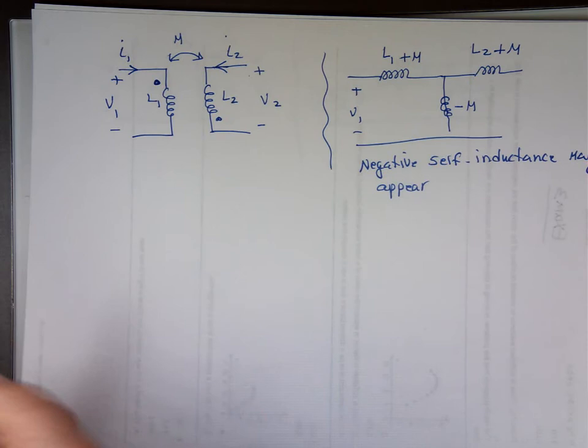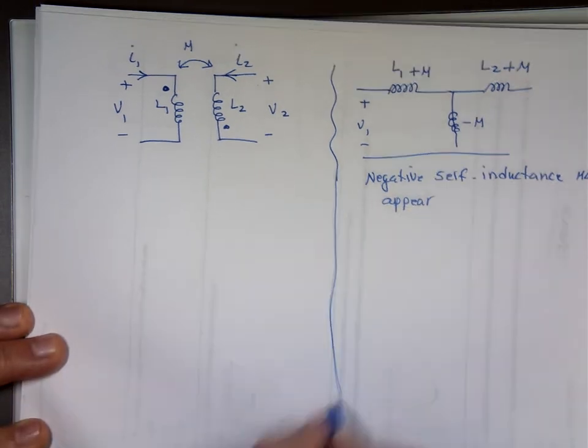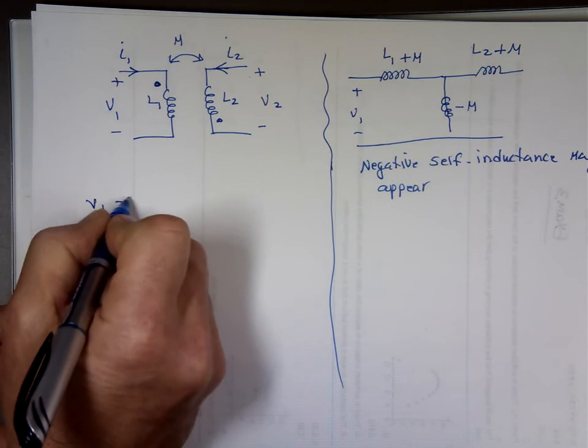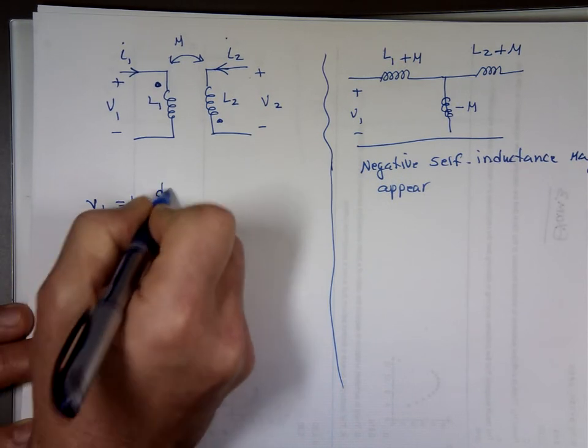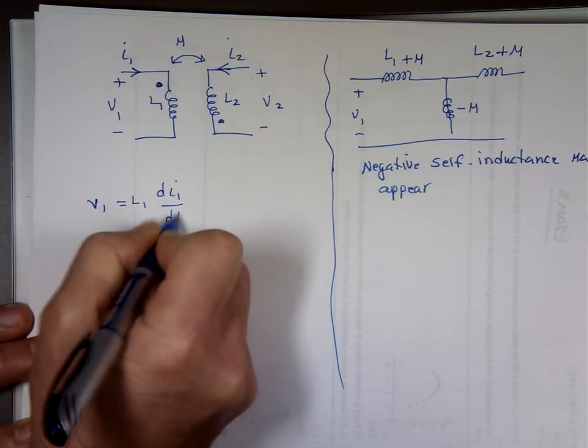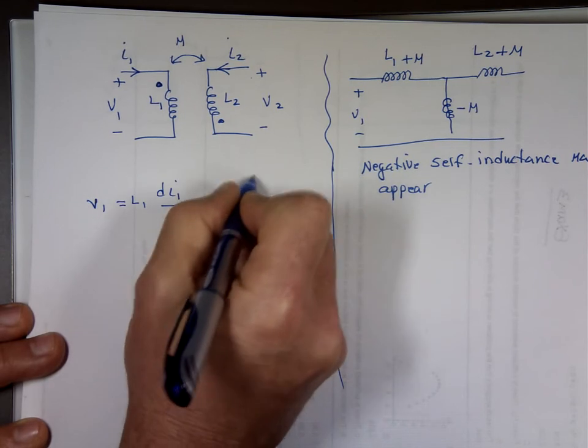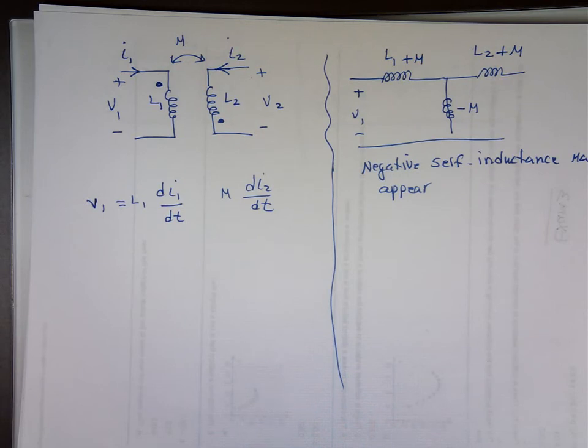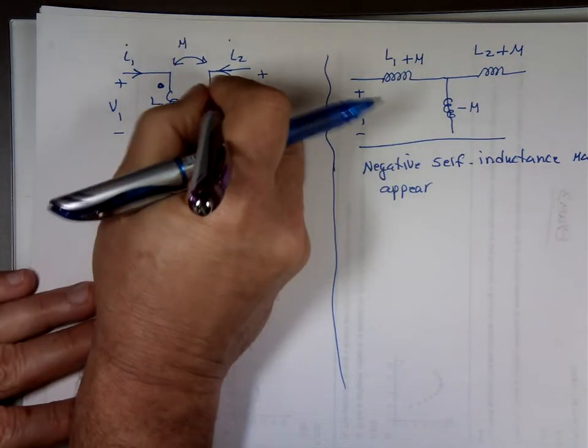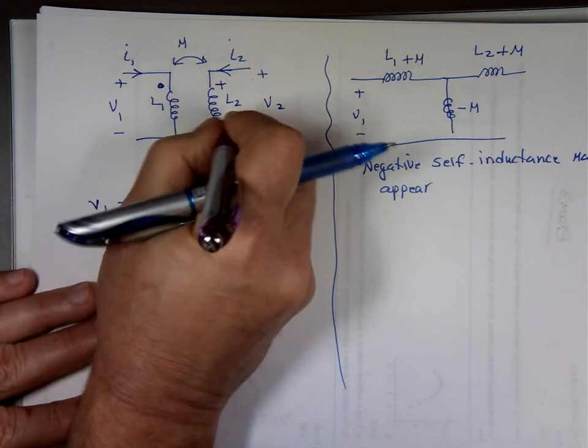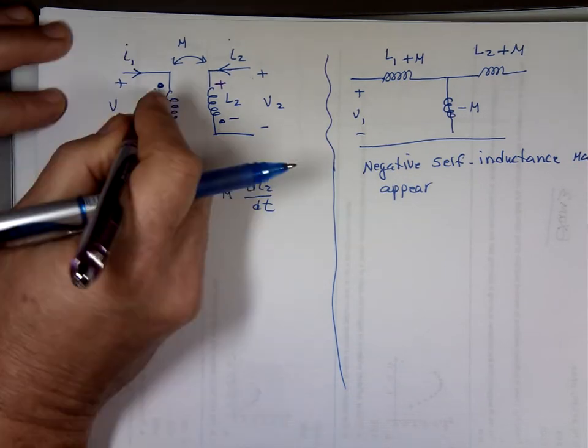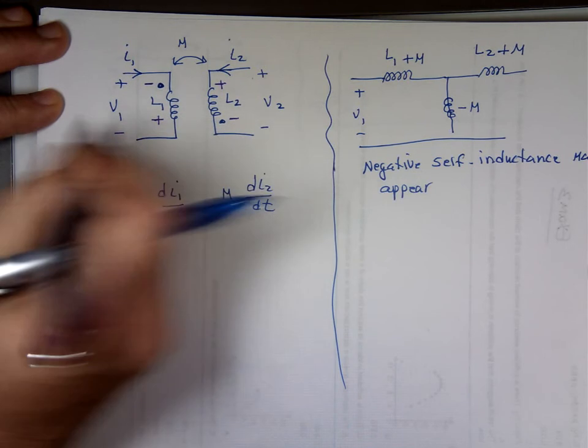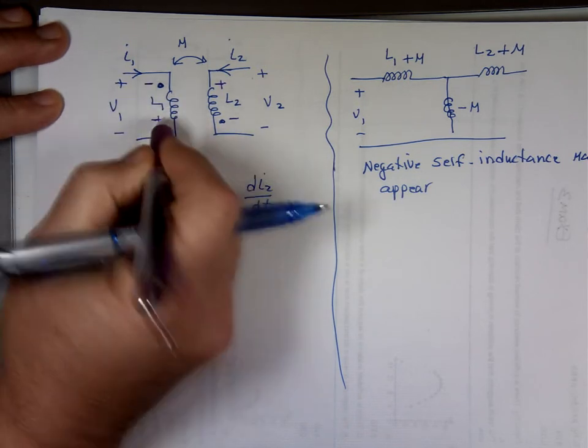And again, we can derive this quickly. I'll do one of them. I'm not going to do both. V1 here equals what? L1, Di1, Dt. And let's look at the mutual inductance, Di2, Dt. The mutual inductance, the current comes down. It marks this plus to minus. Which means the dot here is going to match that dot. It's going to be minus here. It's going to be plus. Notice V1 in relation to this one. It's a minus.